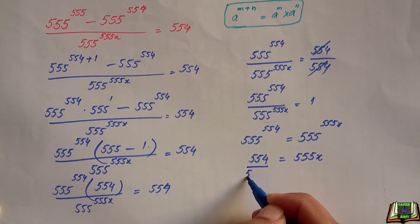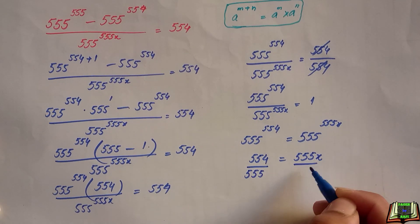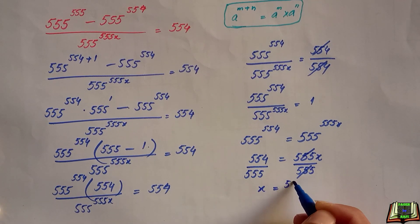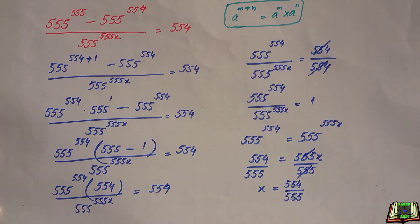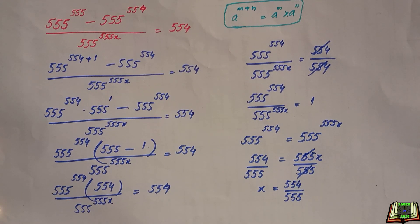Dividing both sides by 555, this and this will be crossed out. x is equal to 554 divided by 555. This is the required value of x which we have to find out.